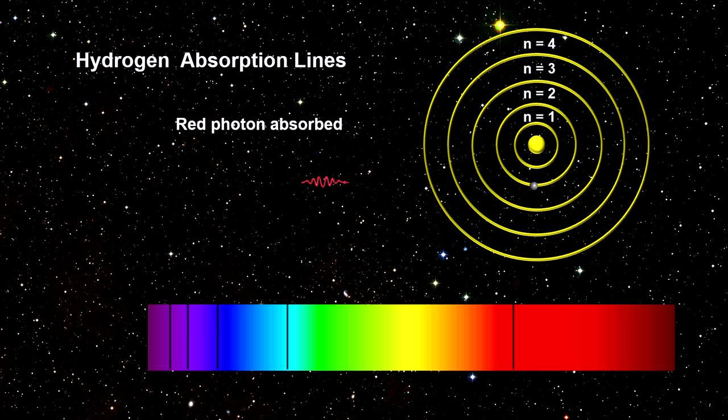When a photon with exactly the right energy level hits an electron orbiting a nucleus, its entire energy is transformed to the electron, which jumps to a higher energy level with a larger quantum number. The photon is eliminated.